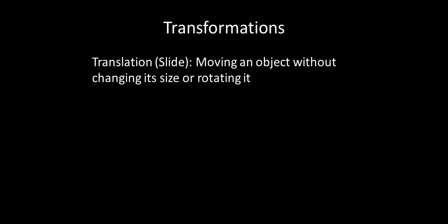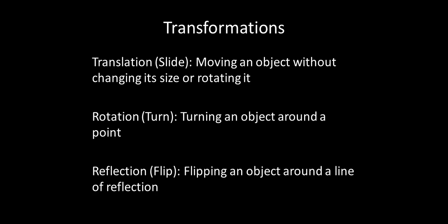So a quick recap on what we've covered today. We have looked at the transformations of translation, which is sliding an object or moving an object without changing its size or rotating it. Rotation, which is actually turning an object around a point. And reflection, which is flipping an object around a line of reflection. Hopefully that lesson's been helpful for you learning birds. Have a wonderful day.